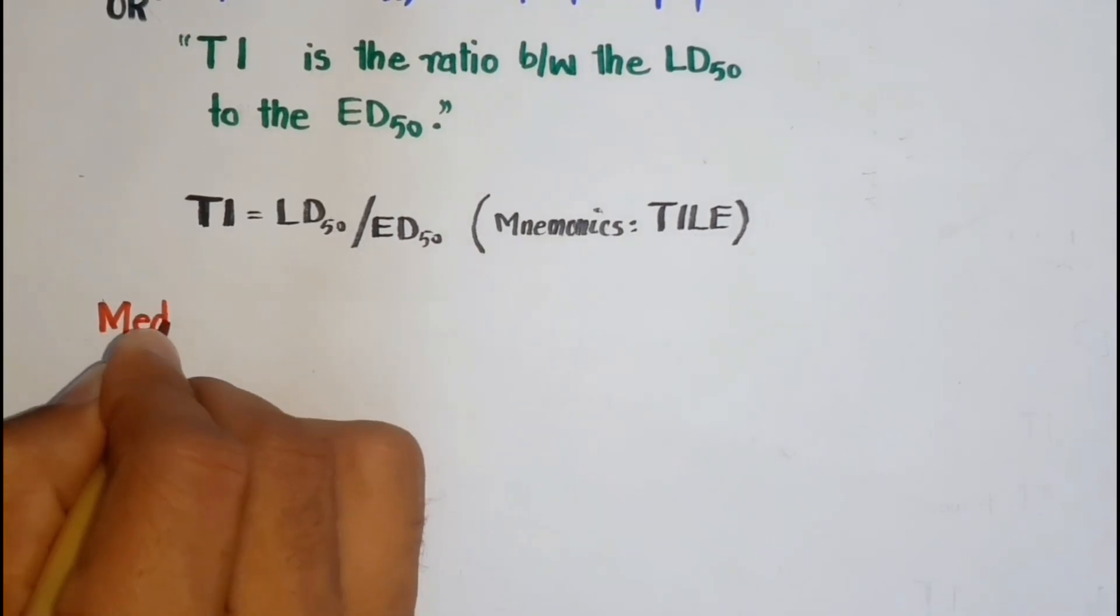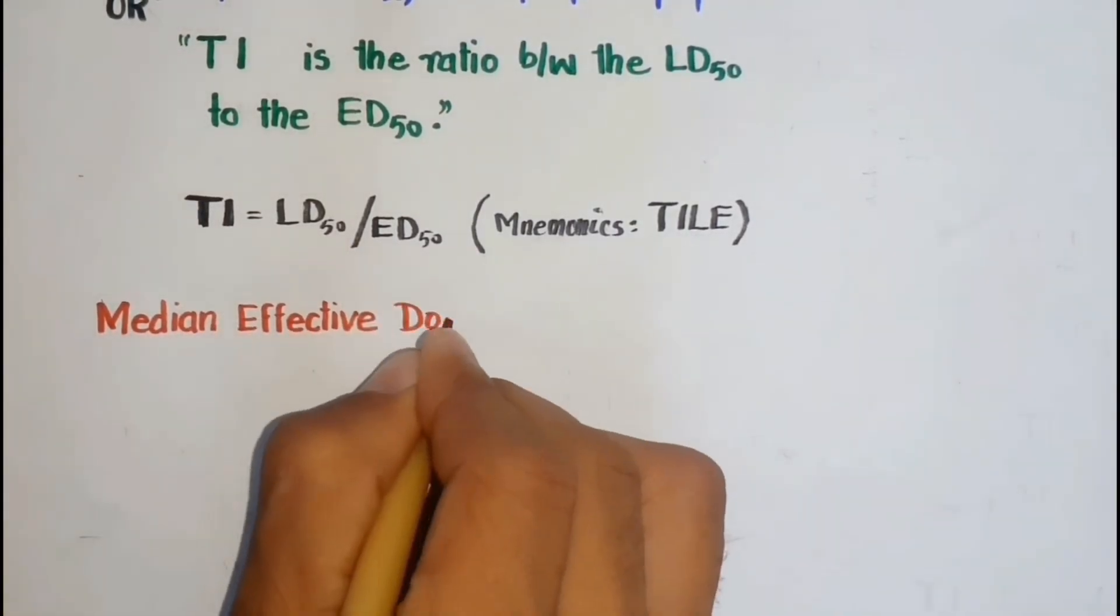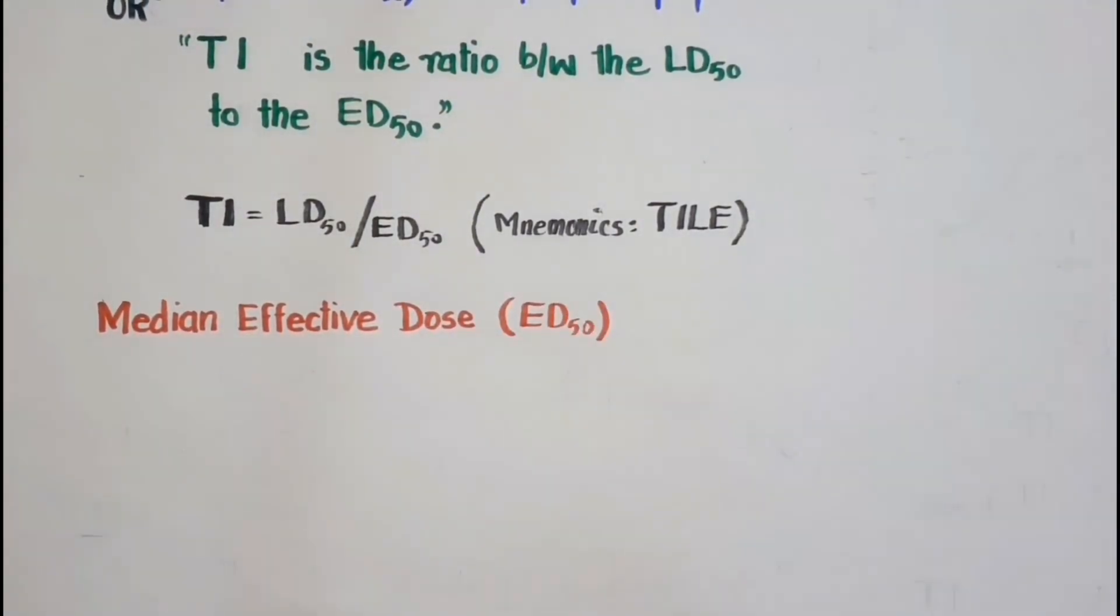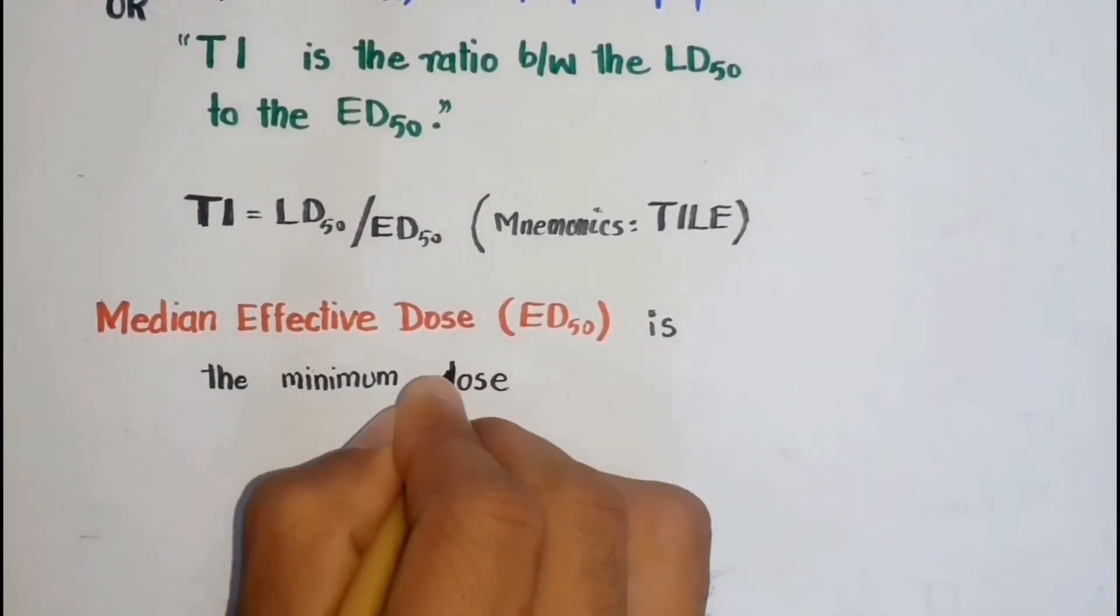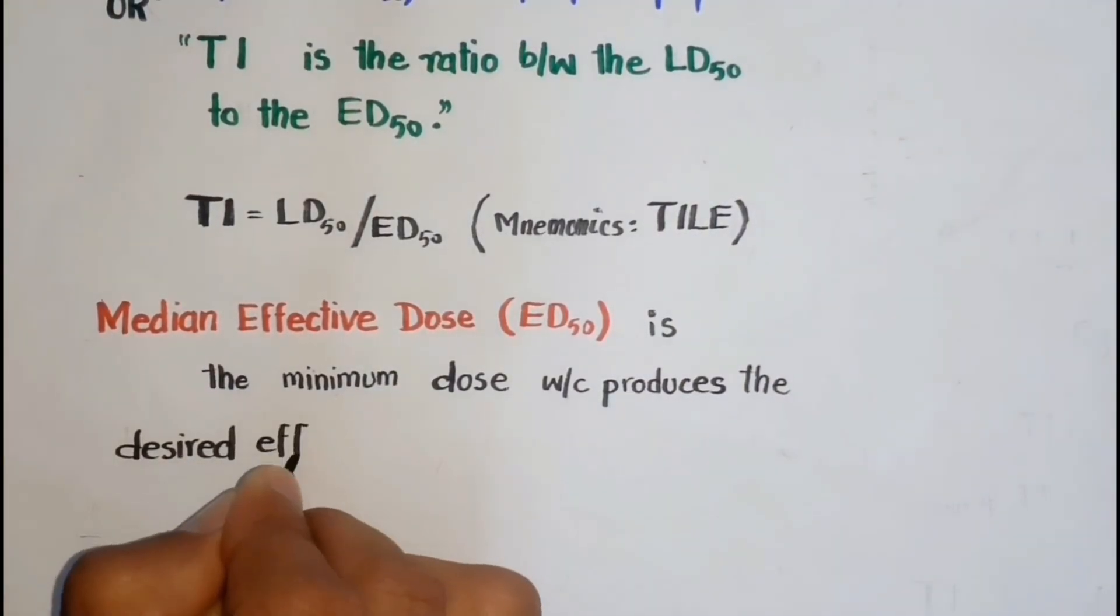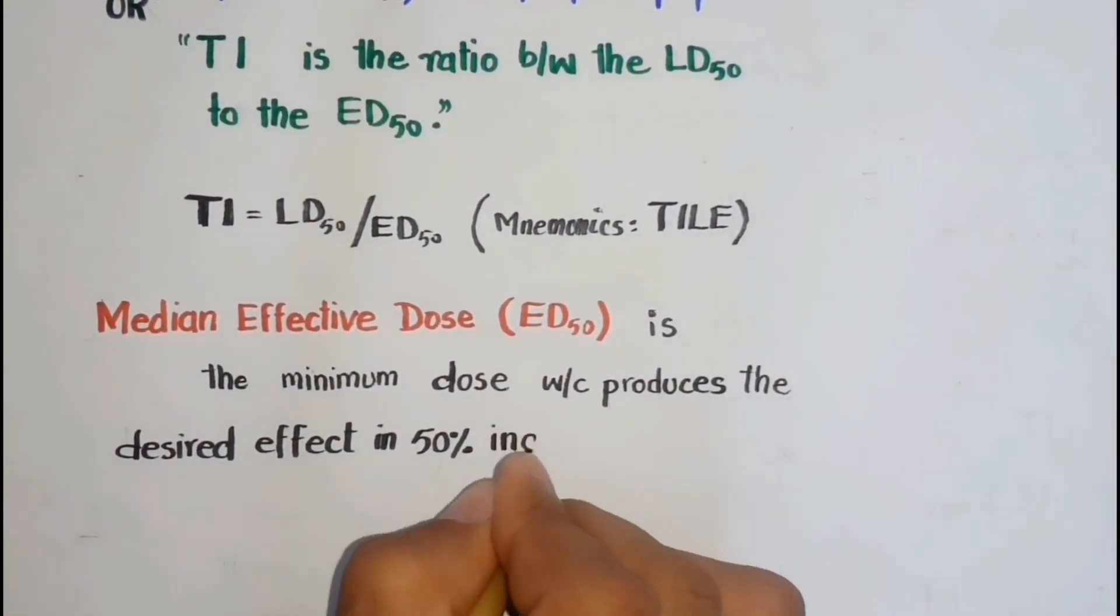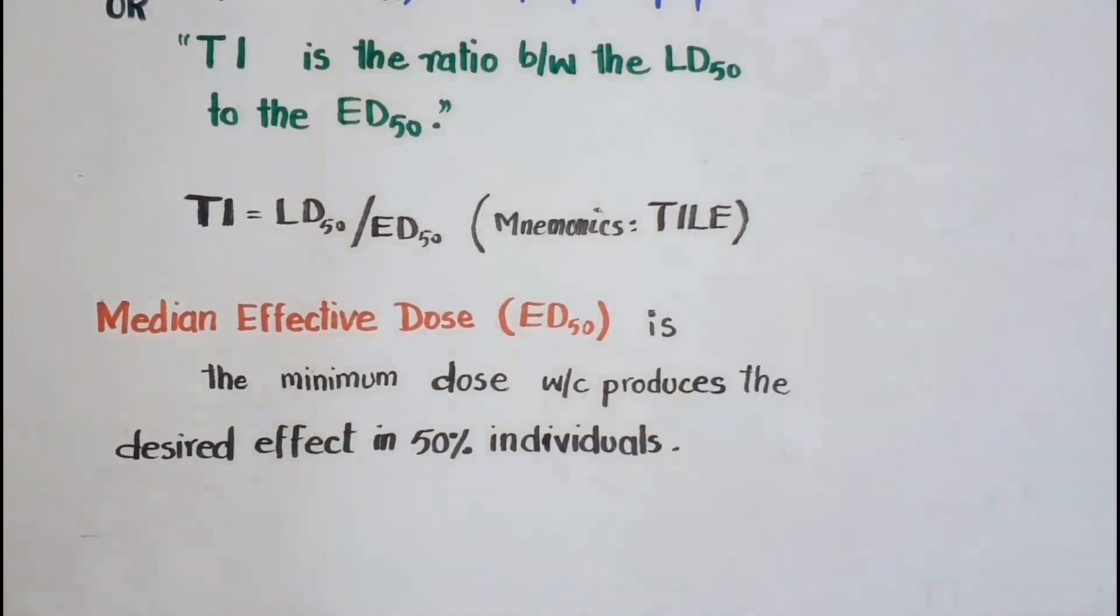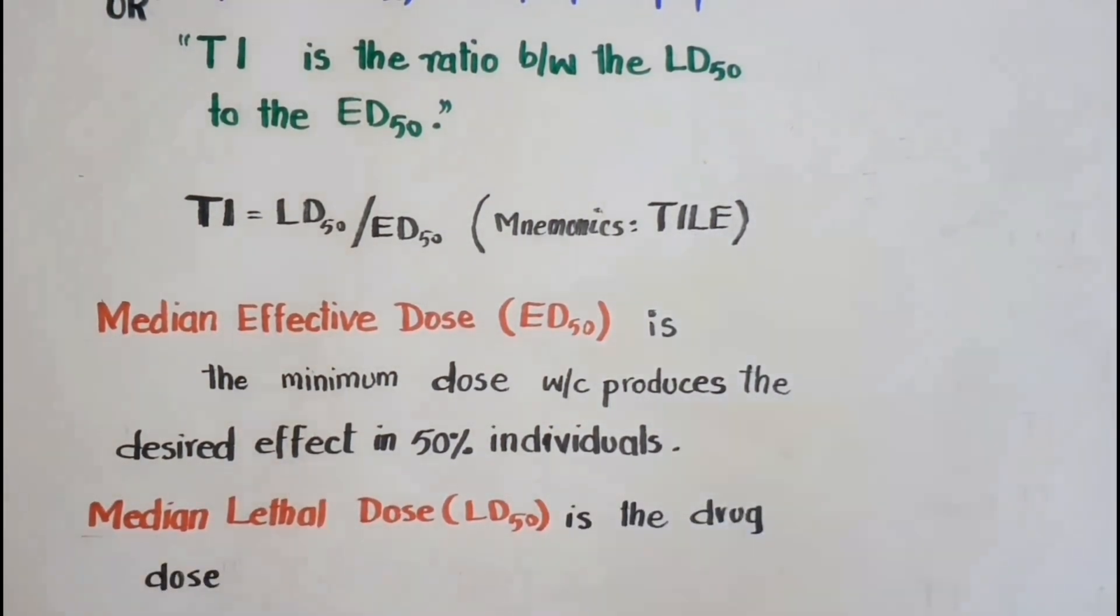In this equation, ED50 or median effective dose is the minimum drug dose which produces the specified desired effect in 50% of individuals or test animals, and LD50 or median lethal dose is the dose of a drug which causes death or kills 50% of the under trial animals.